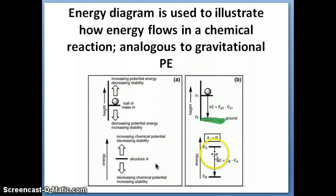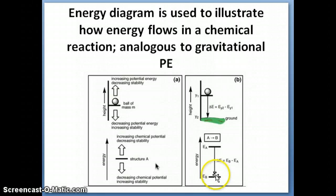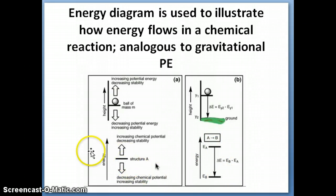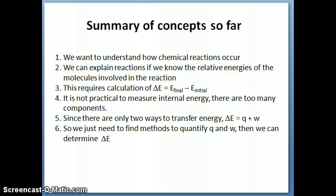If we reverse the reaction so that B goes to A, we now have a positive delta E, because we're going from an initial state lower in energy to a final state higher in energy. Taking final minus initial gives a positive number. This has been quite a long set of videos on thermodynamic terms and definitions, so I want to summarize some of the important concepts.